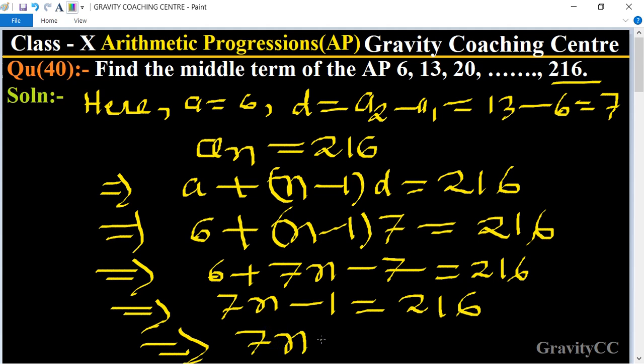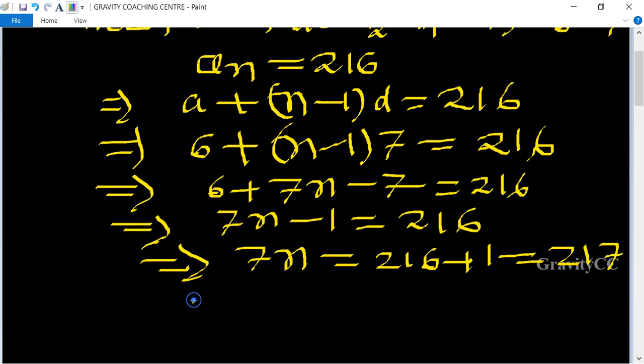Implies that 7n equal to 216 plus 1 equal to 217. So therefore n equal to 217 upon 7.